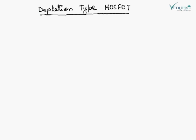As we know there are two types of MOSFET: depletion type and enhancement type. Now we will see the working and characteristic of depletion type MOSFET.